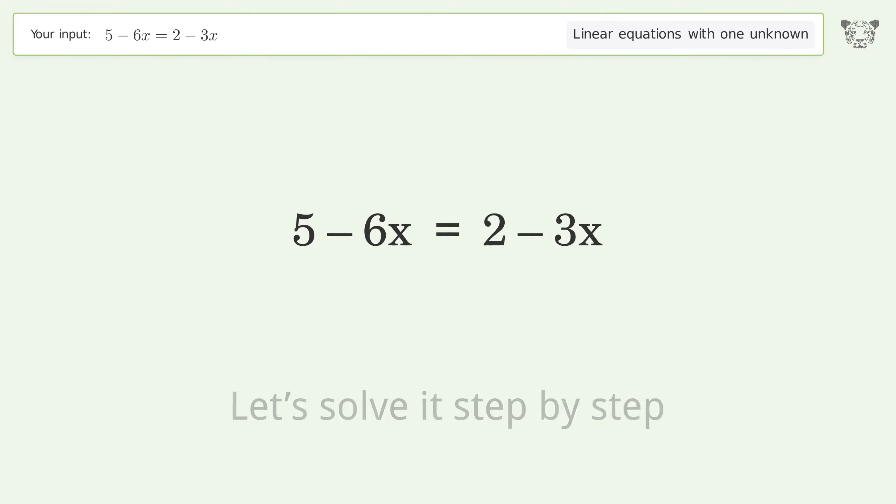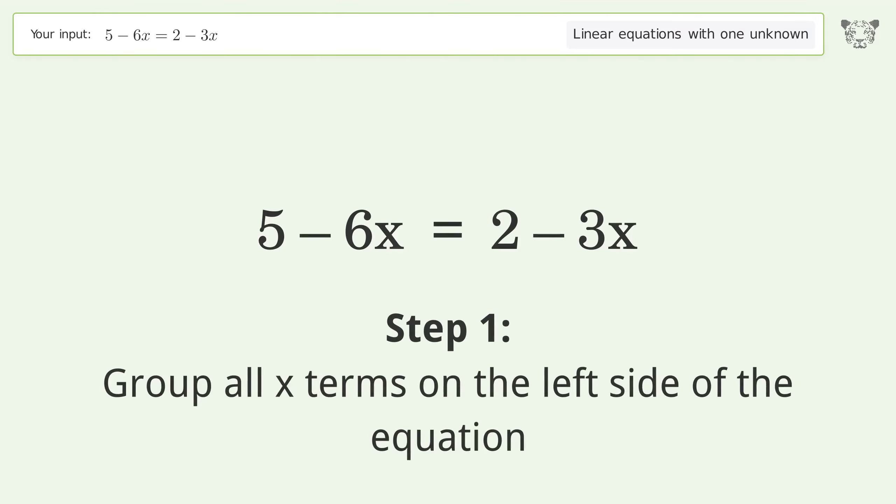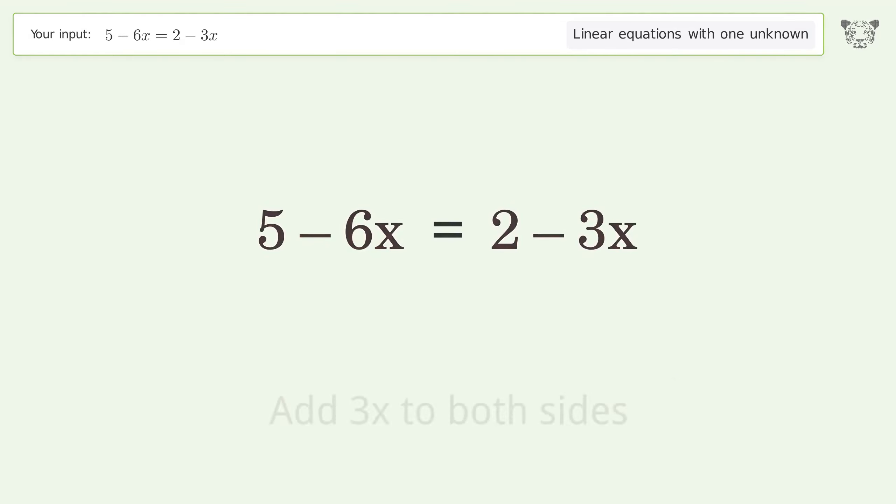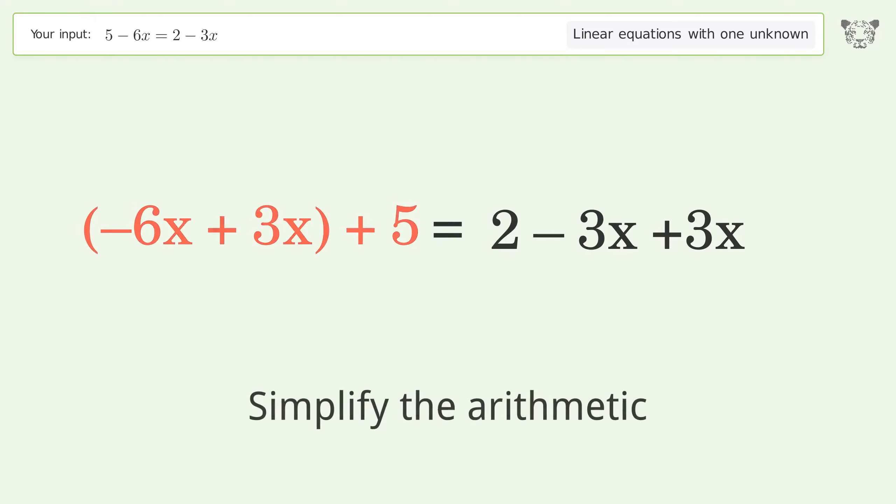Let's solve it step by step. Group all x terms on the left side of the equation. Add 3x to both sides, group like terms, and simplify the arithmetic.